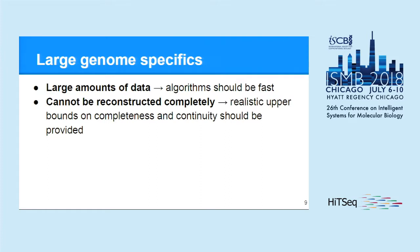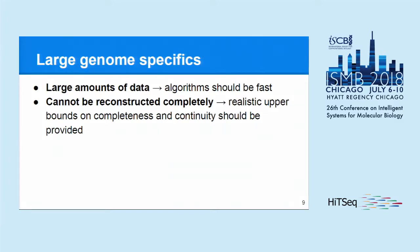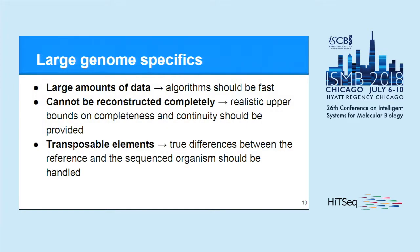Second, these genomes are usually complex and cannot be reconstructed completely, so we need some realistic upper bounds on their quality, because we cannot compare assembly quality with finished reference quality. And last but not least, the presence of transposons results in a large number of differences between the reference genome and the actually sequenced organism, and we need to distinguish these differences from real assembly errors.